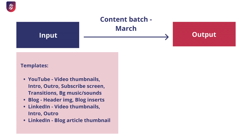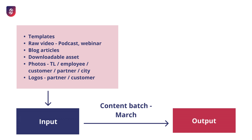So if I know what my input will look like and what my output should look like, I can now go ahead and create the actual templates that will be used as input. But next to the templates, I need the raw materials — for example, the raw videos, which could be podcasts or webinars, and the blog articles, because otherwise there's nothing to repurpose.